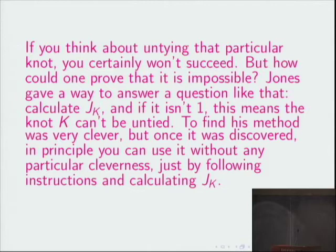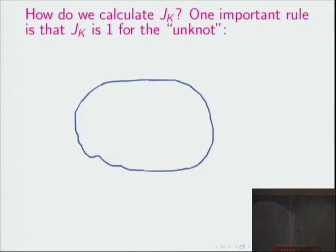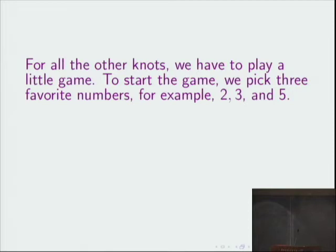So finding the method by which Jones calculates J sub K was clever, but once it was discovered, in principle you can use it without any cleverness. There's just a set of instructions that you're supposed to follow, and you use them to calculate J_K. So how do we calculate J_K? Well, one important rule is that it's 1 in the case of the unknot, which I probably should have drawn before. Untangling a knot means moving around the strings so as to transform it into the unknot, without breaking or tearing anything.